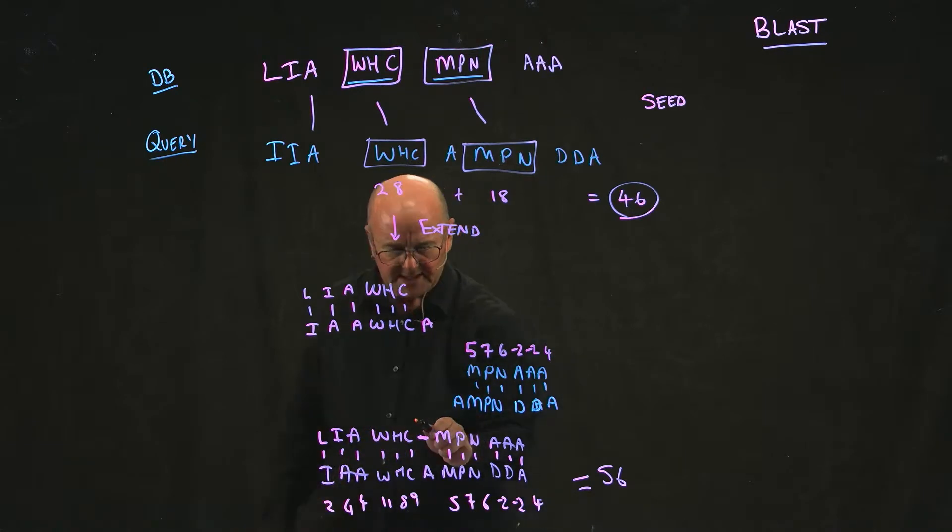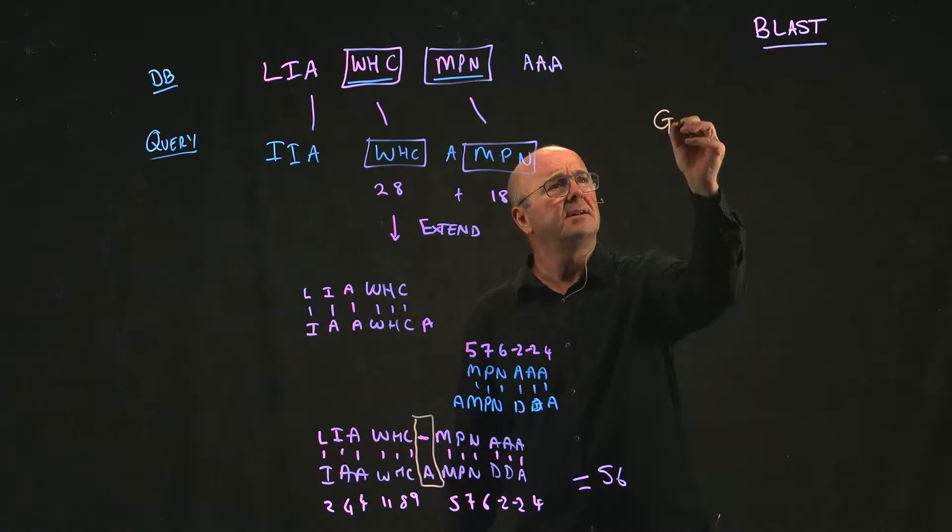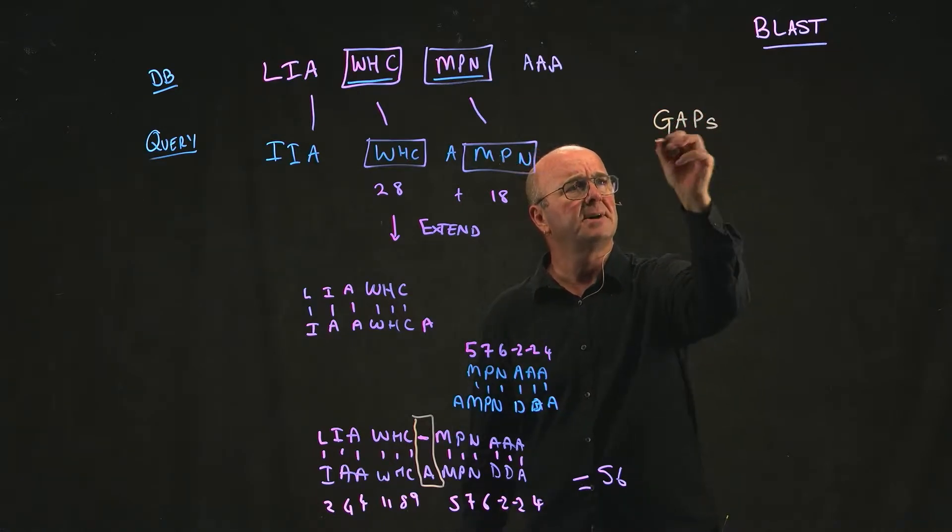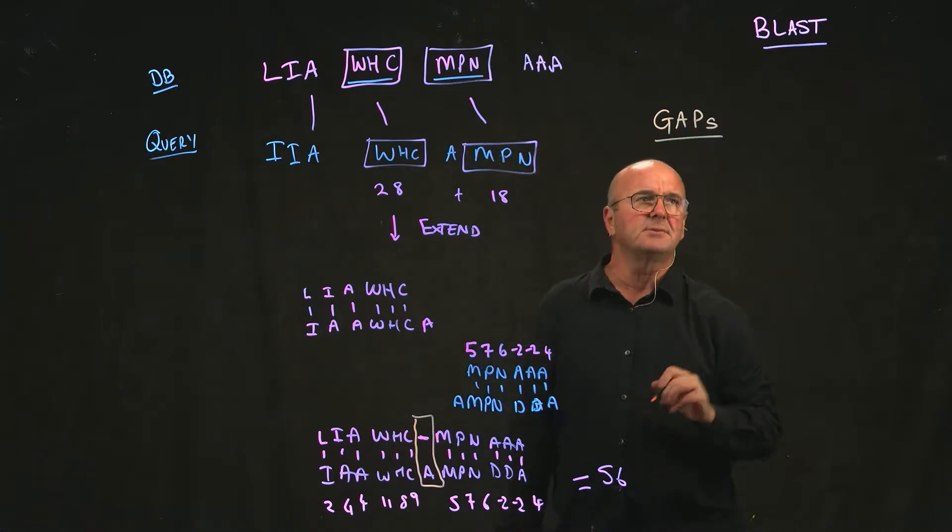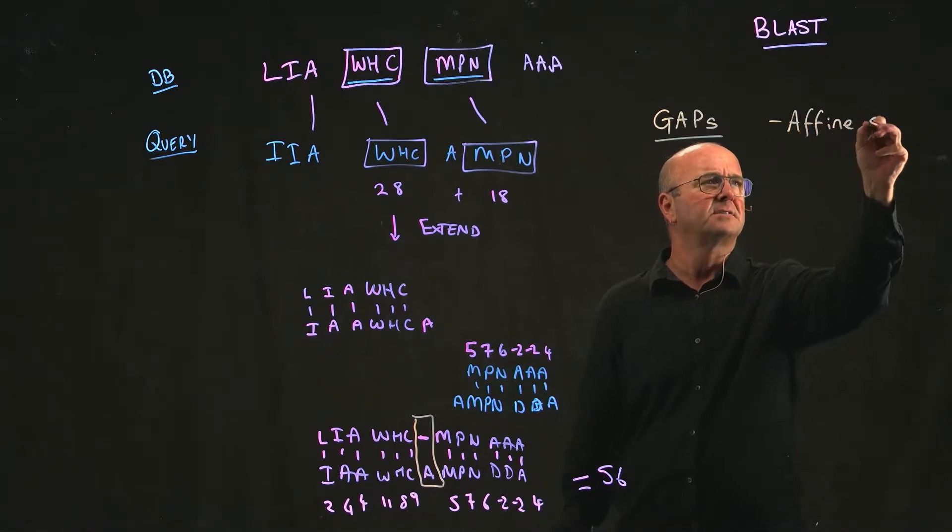So what are we going to do about this pesky little bugger here? We've got this gap. The way that we typically think about gaps is we use what's called an affine scoring system.